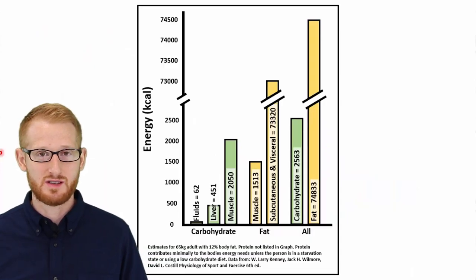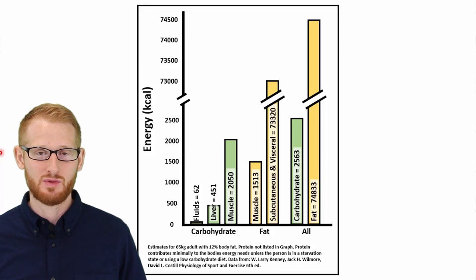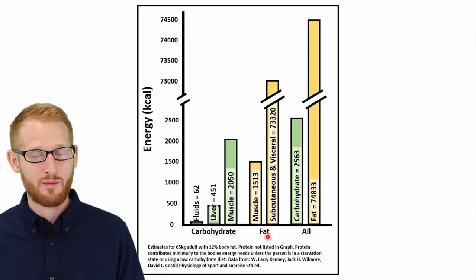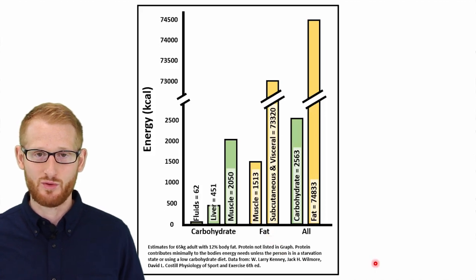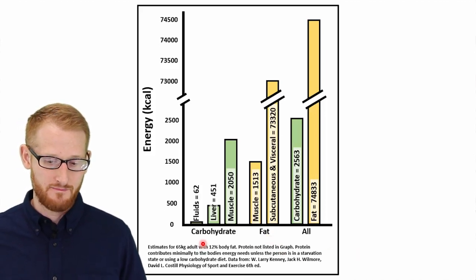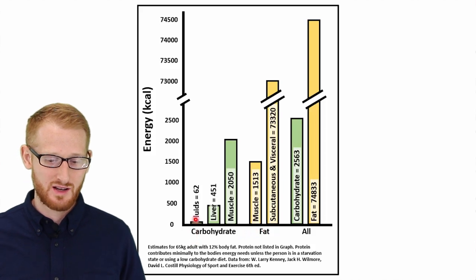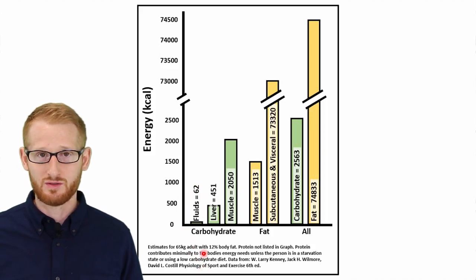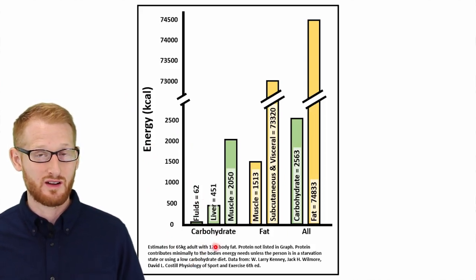That covers all the major energy sources found in food. One that wasn't mentioned is alcohol — alcohol does have energy in it, but it's not something that should be in a typical diet in high enough volumes to be important. We have carbohydrates and fat as our two primary energy sources. Carbohydrates in body fluids — like blood glucose — represent very little energy in kilocalories. The liver stores a bit more carbohydrate as glycogen.